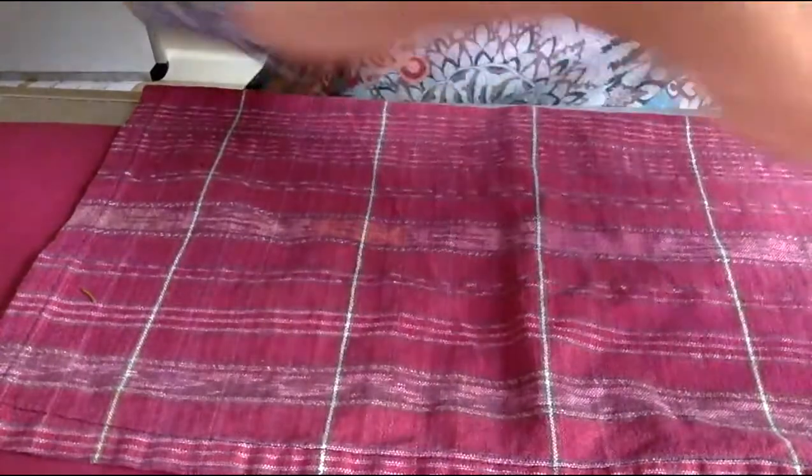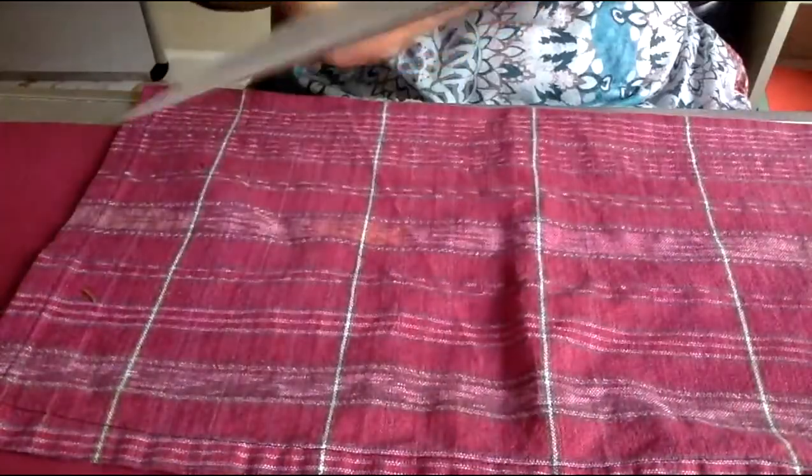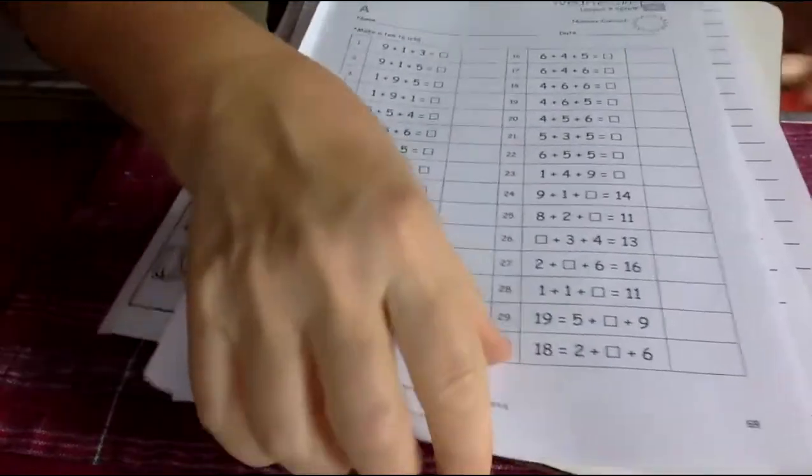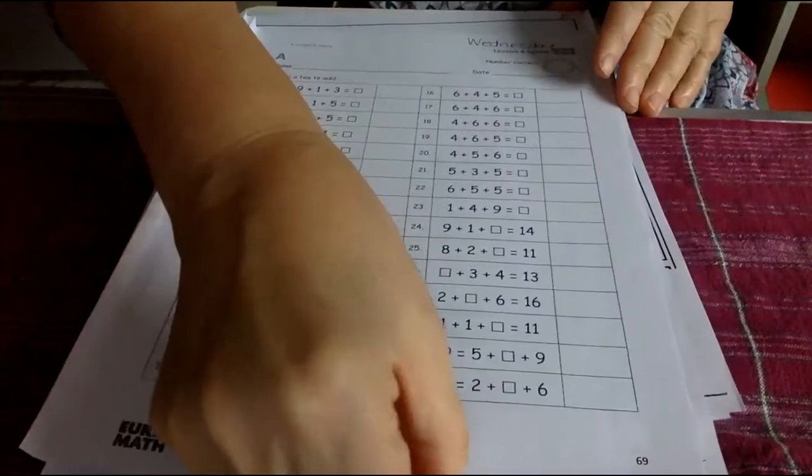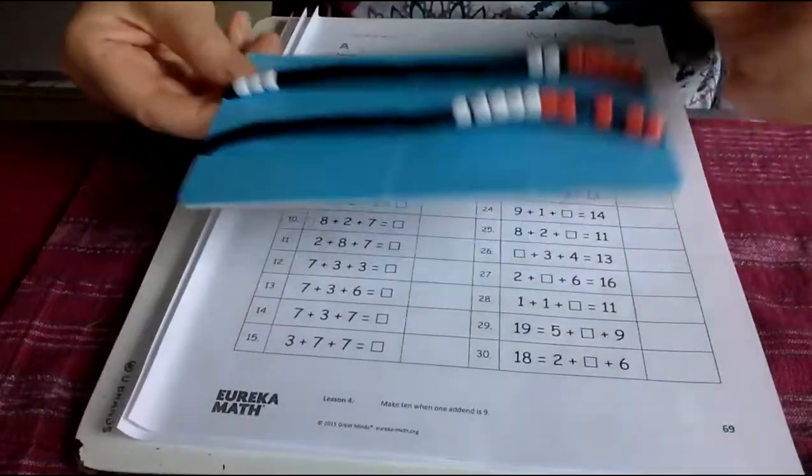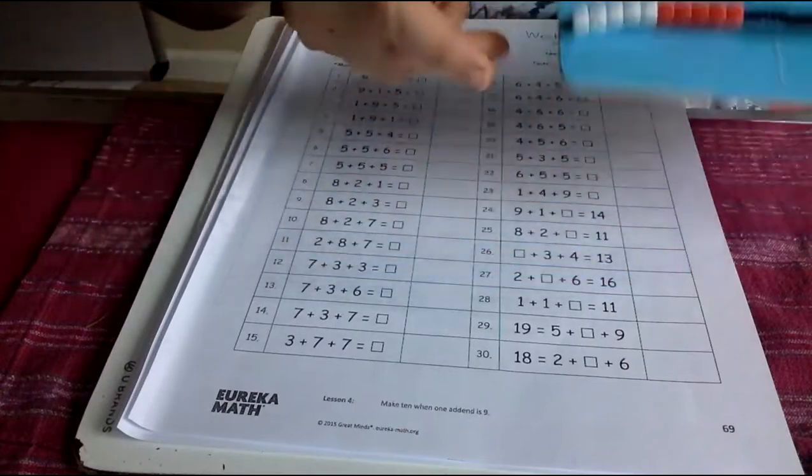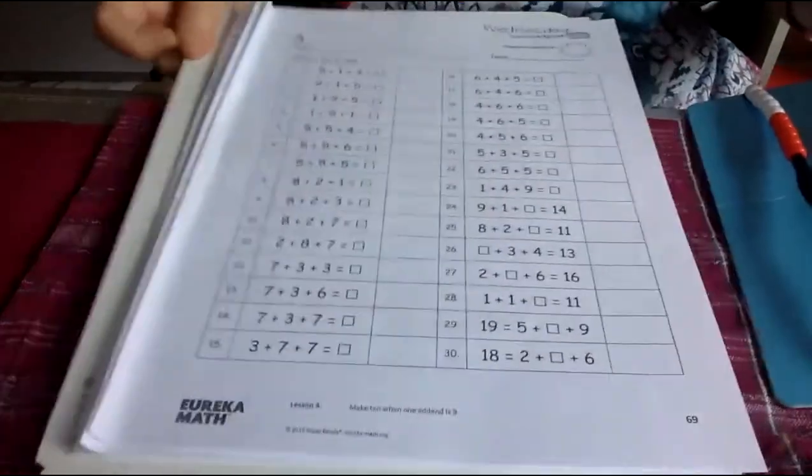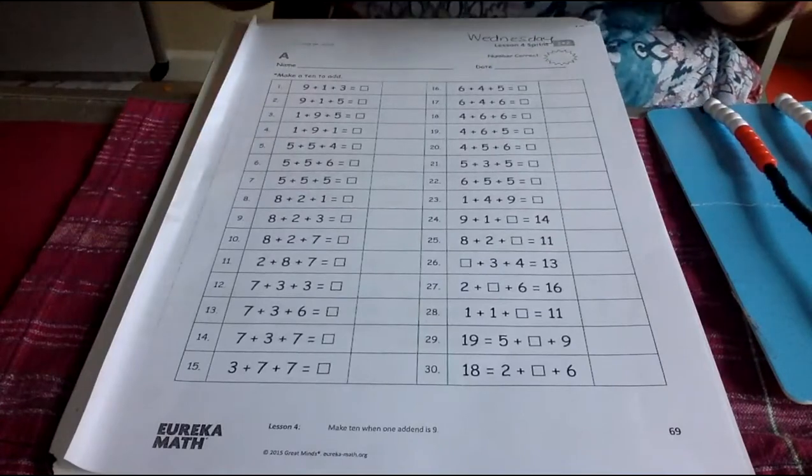For today, we have this sheet that is adding three numbers. It's a tricky sheet because three numbers, you're like, how am I going to do that? Well, you do have your math rack. Okay, so you have your math rack. But there is another trick that you can use that will help you.